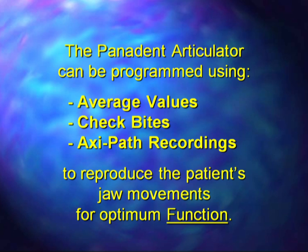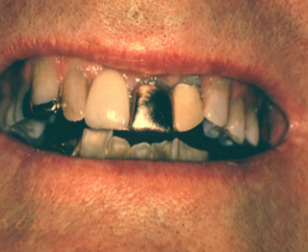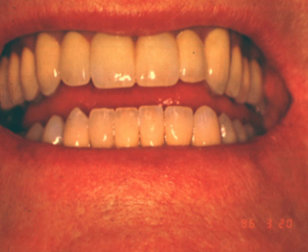The Panit articulator can be programmed using average values, check bites, or axiopath recordings to reproduce the patient's jaw movements for optimum function. We've got a lot of functional issues going on here — chipping and breaking down. We can diagnose why this problem is happening, and give a better diagnosis and treatment plan for not only optimum aesthetics, but optimum function as well.